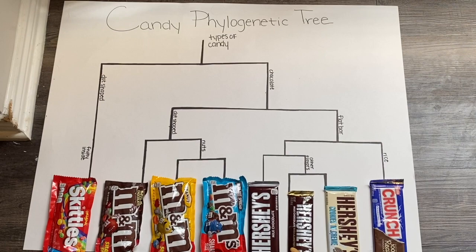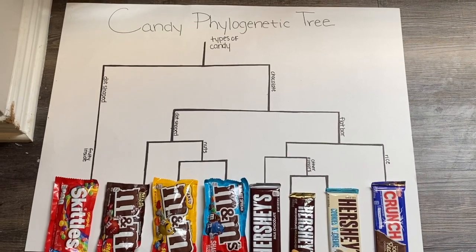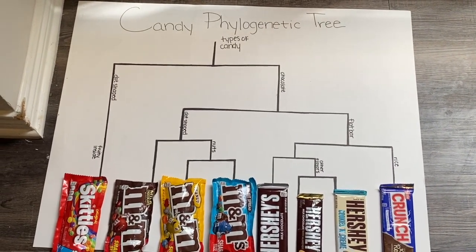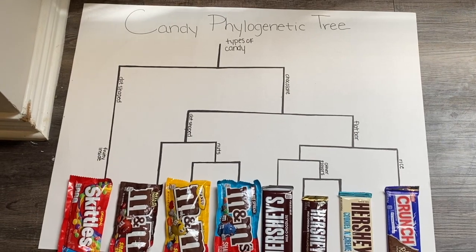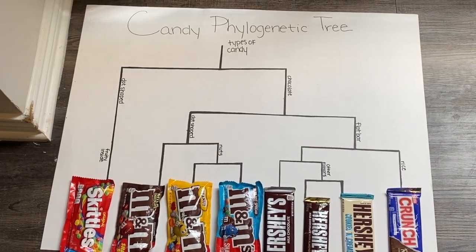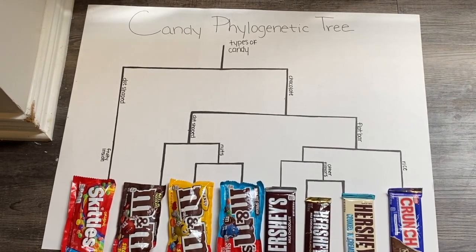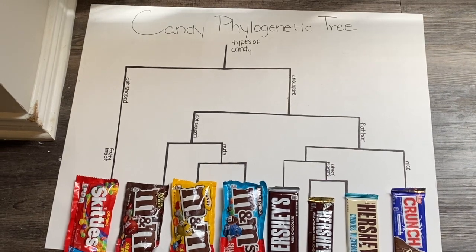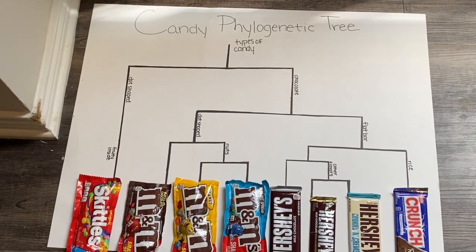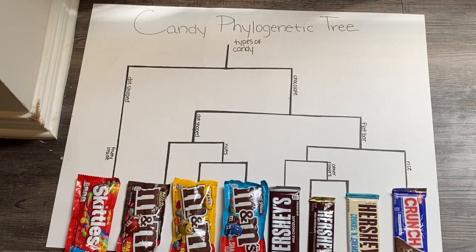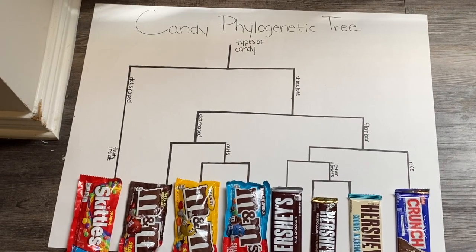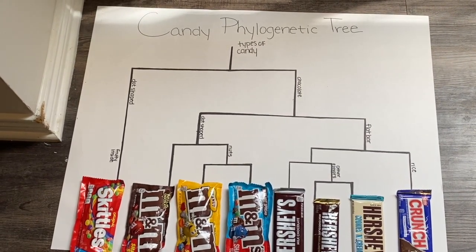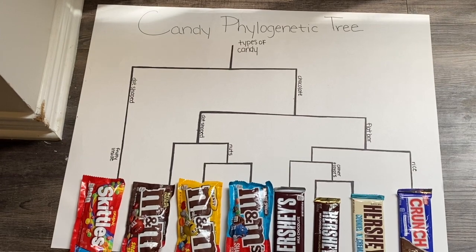Phylogenetics is the study of the relationship among and between species or individuals based on the genes, alleles, or characteristics that they have. A phylogenetic tree is a graphical representation of the amount of similarity between operational taxonomic units, also referred to as OTUs. The group of interests for this tree are found at the ends of the lines, which are referred to as the branches of the tree.